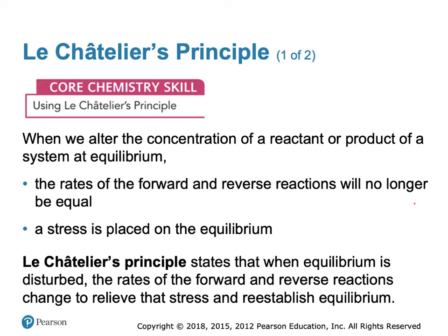There are three ways in which we can change the conditions of a chemical reaction at equilibrium — three ways to stress the system. We can change the concentration of one of the components (a reactant or product), we can change the pressure, or we can change the temperature. What we're going to focus on here with acids and bases is what happens when we change the concentration of a reactant or product.